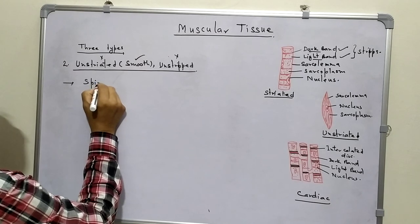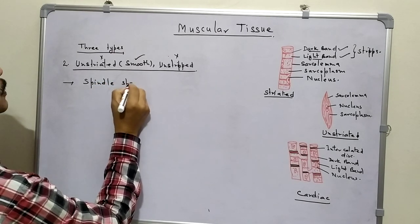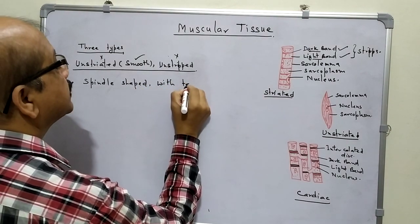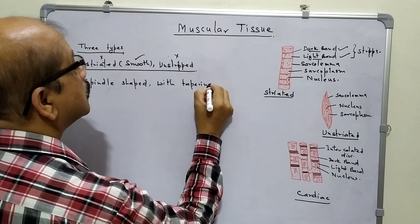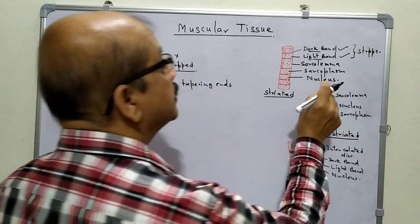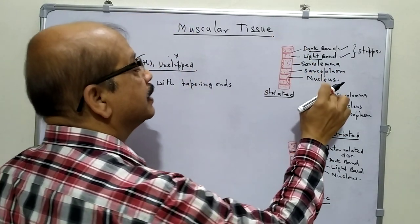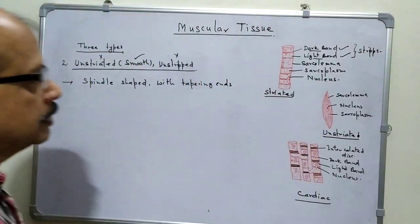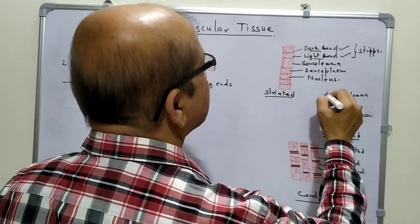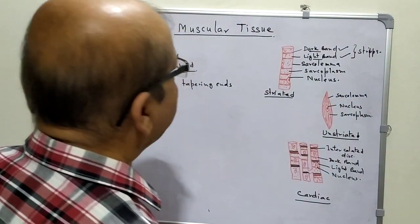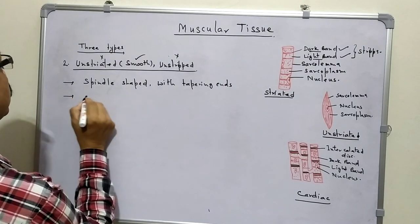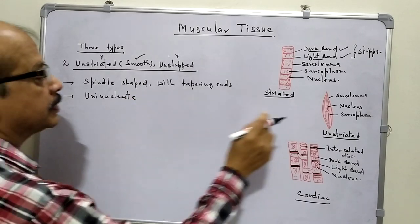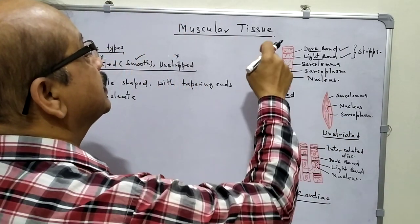These muscles are usually spindle-shaped with tapering ends. Tapering ends are pointed on both sides, as opposed to blunt ends. So these pointed ends are known as tapering ends. They are uninucleate, meaning only a single nucleus is present, which is centrally located.